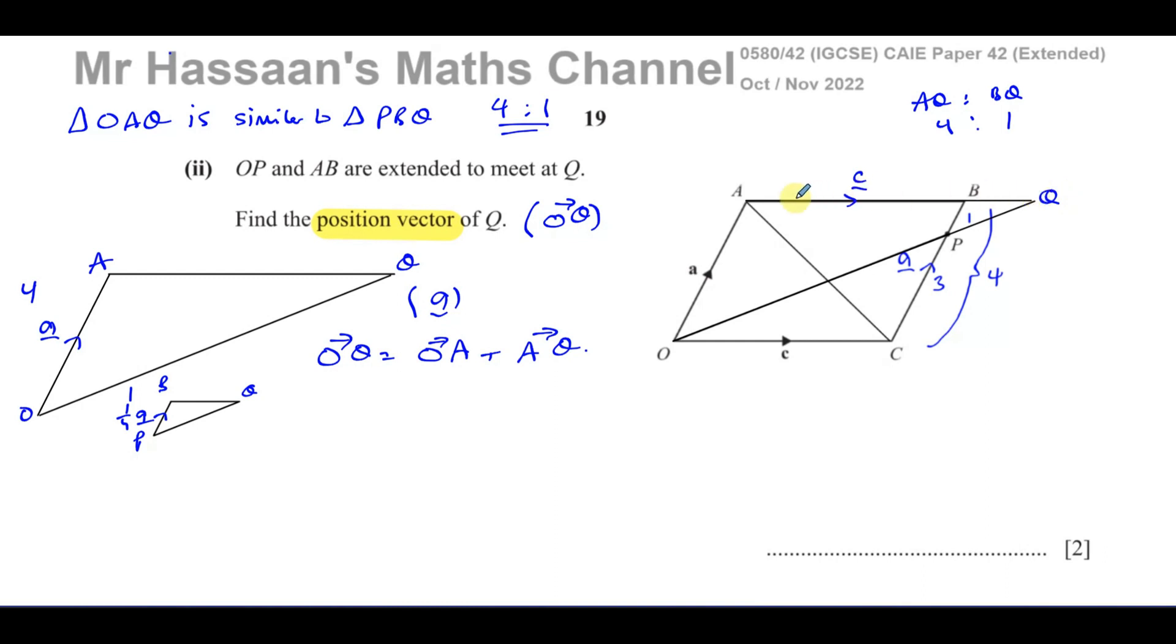So I can say that A to B, the vector A to B, is equal to 3 quarters of the vector A to Q. So I know the vector A to B is the vector C. So the vector C is 3 quarters of the vector A to Q. And what I need to find is A to Q. That means A to Q, if I rearrange this, is 4 over 3 of C. A to Q is 4 over 3 times C. So I know that this is A plus 4 over 3 C. And there's my answer. A plus 4 over 3 C.